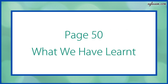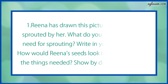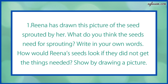Now turn to page number 50. Let's discuss what we have learnt. Question number 1 says: Reena has drawn a picture of the seeds sprouted by her. What do you think the seeds need for sprouting? Write in your own words how Reena's seeds would look if they did not get the things needed. Show by drawing a picture. So, this you can do yourself.